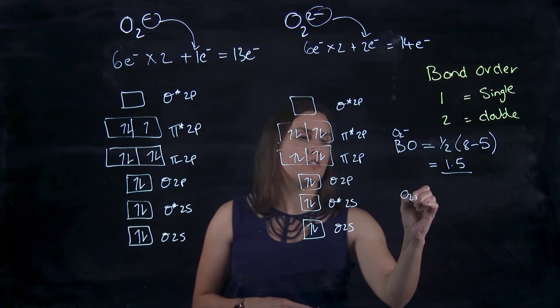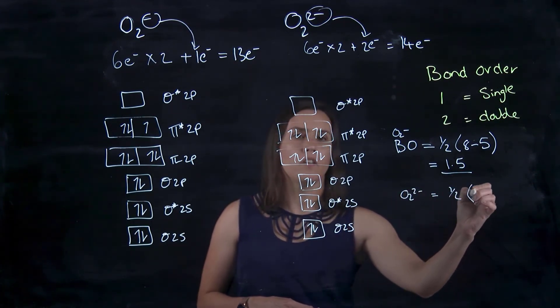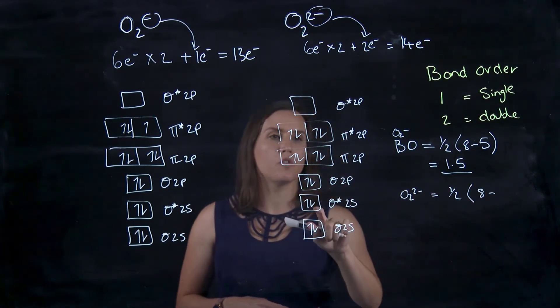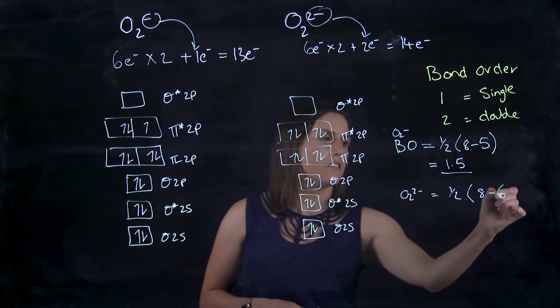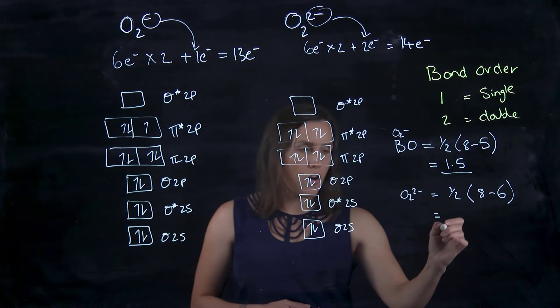And if we look at O2 2 minus, we've got half, we've got 2, 4, 6, 8 still, but now we've got 2, 4, 6. So that gives us a value of 1.